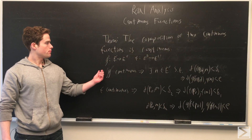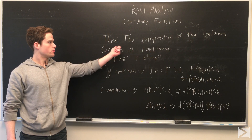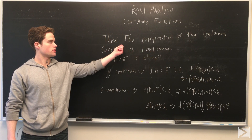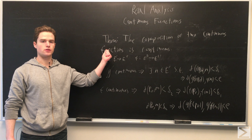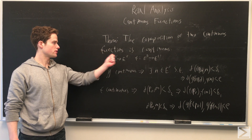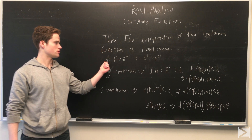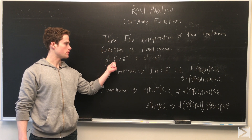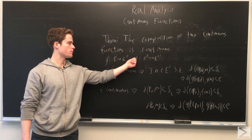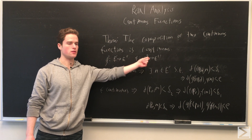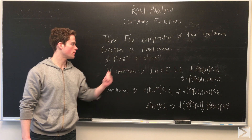We can prove that the composition of two continuous functions is also continuous. We have some G going from E prime to E double prime, and F going from E to E prime.